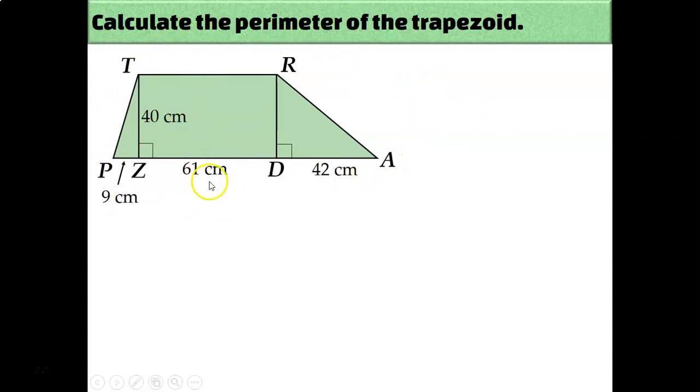We know one of the sides is 9 plus 61 plus 42. We could actually label this side as 61 though. This is basically a rectangle that we see in the center of this trapezoid. And opposite sides of rectangles are equal. Okay, so now we know two of the sides. But we still need to know the length of TP and RA. In order to calculate that, we're going to have to use the Pythagorean theorem.